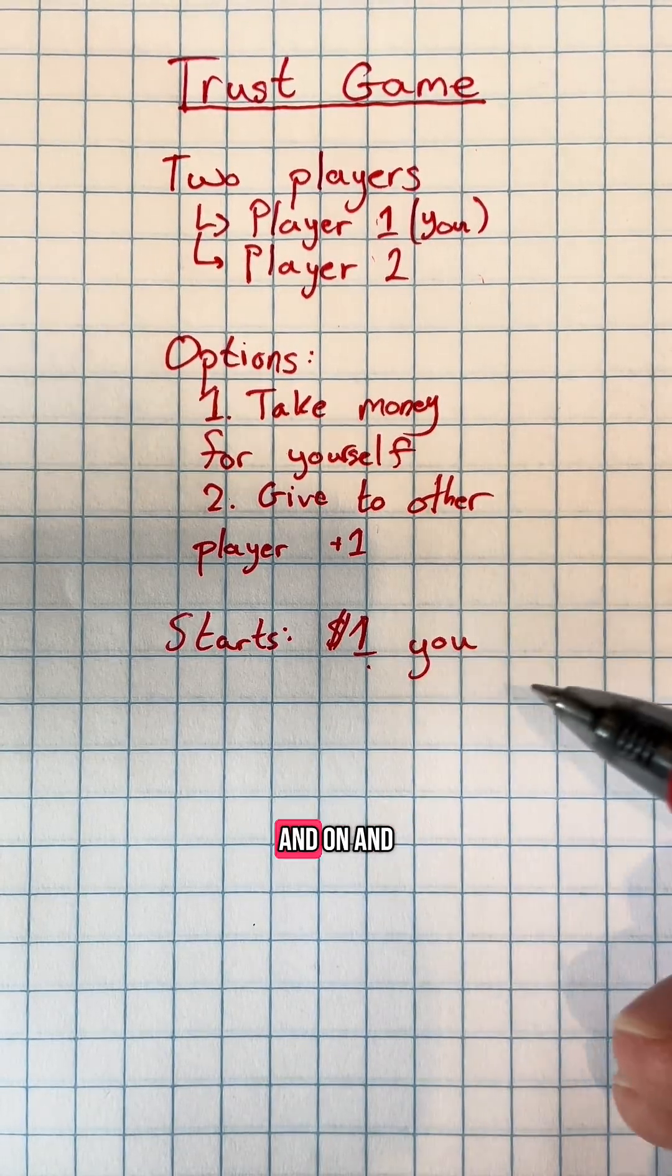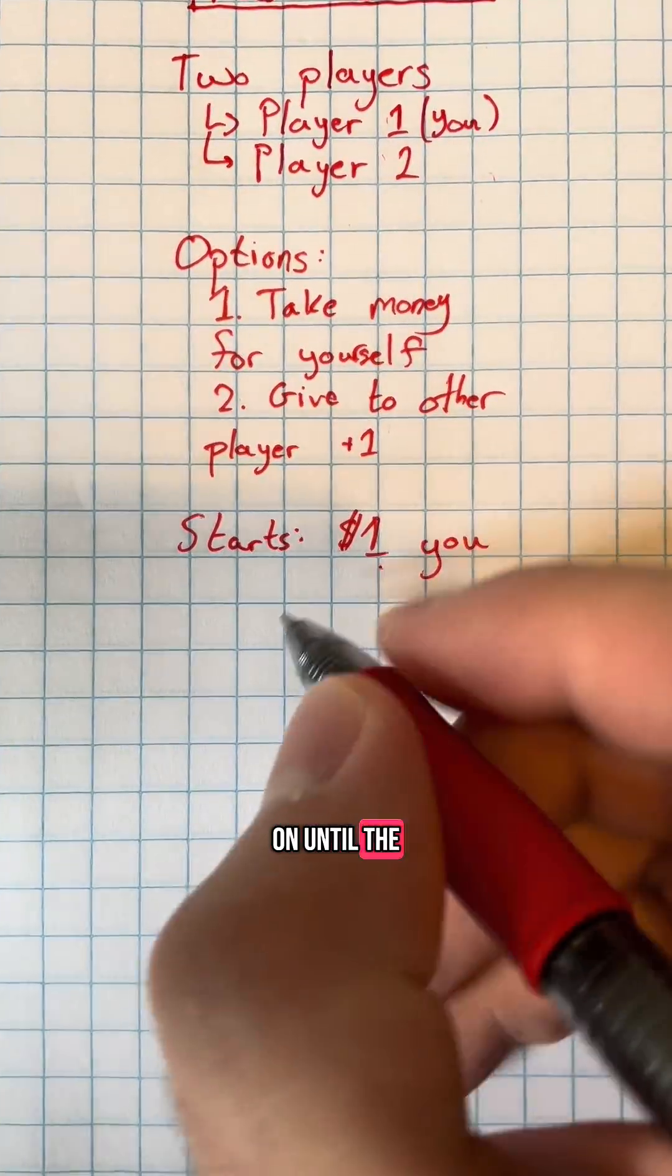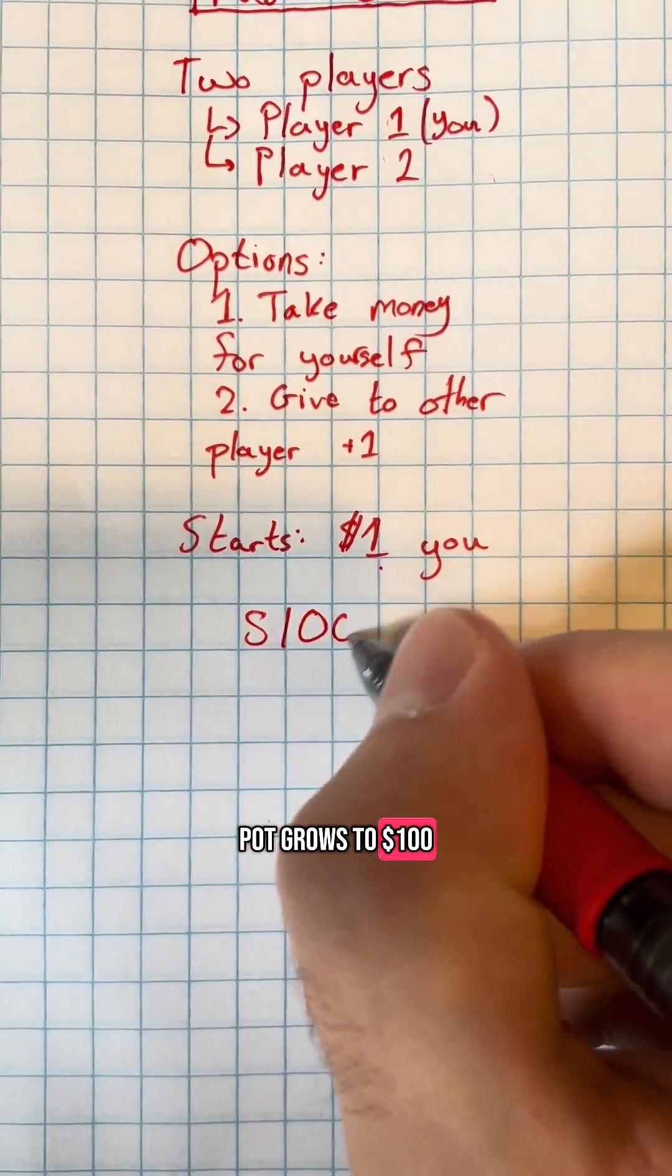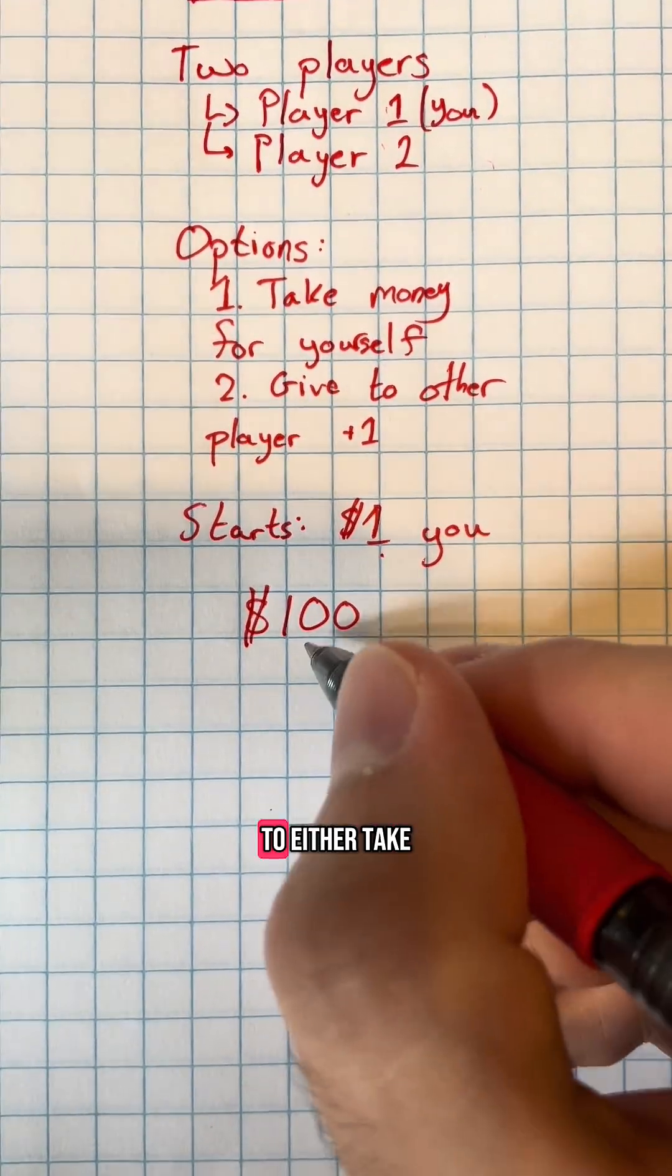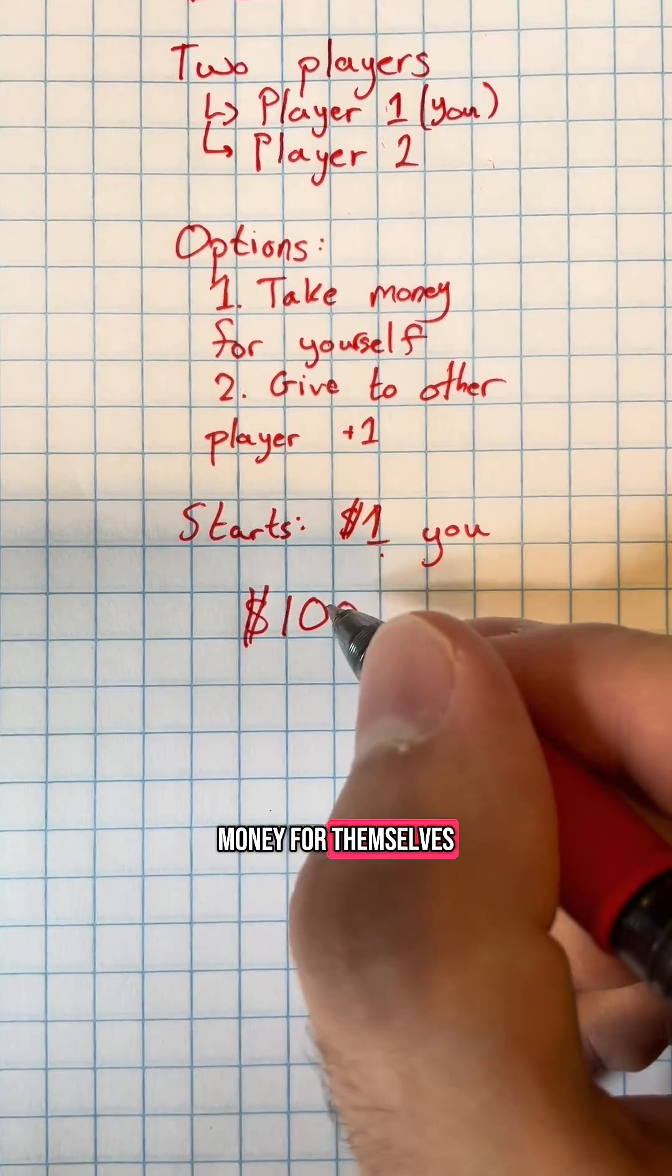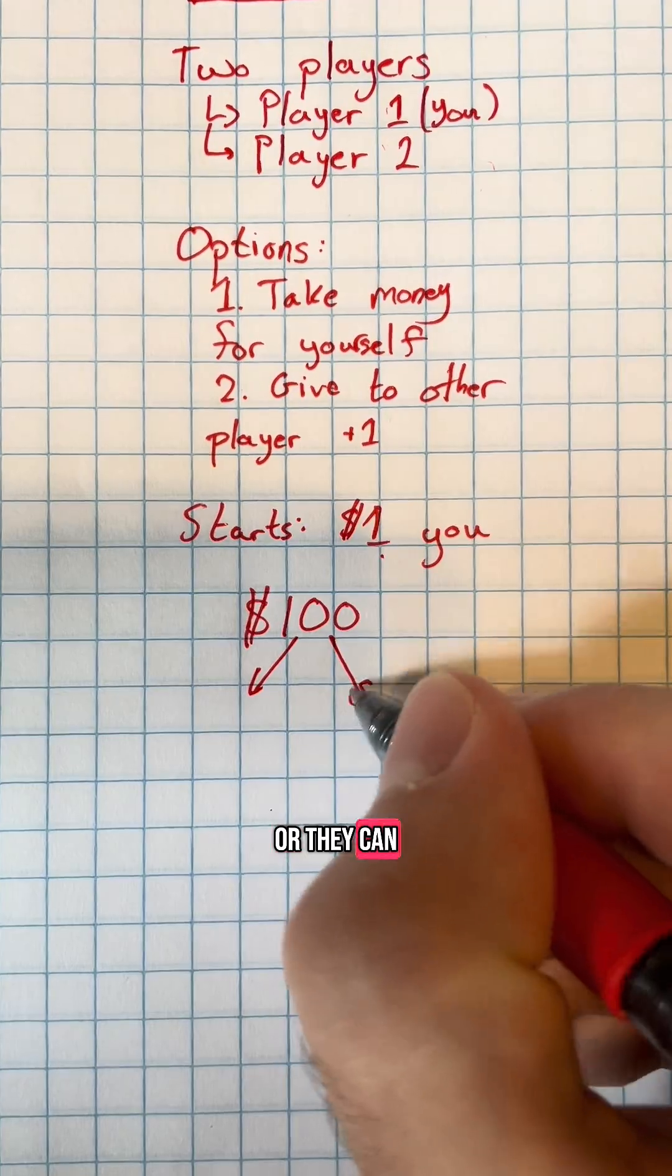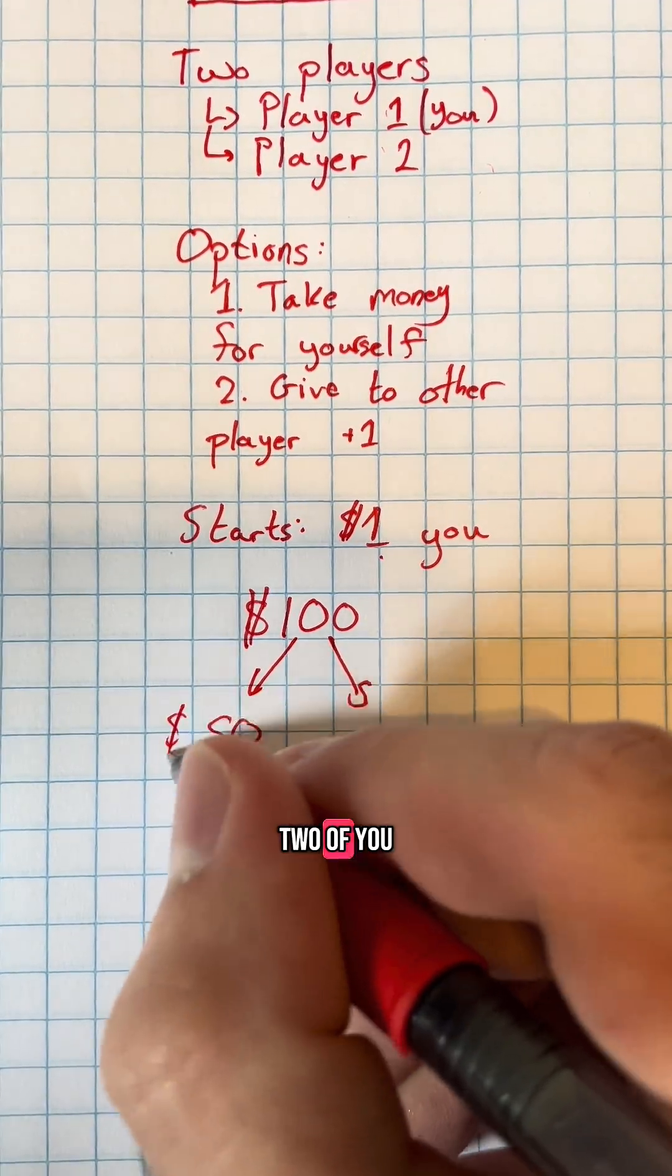This continues on and on until the pot grows to one hundred dollars. At this point, player two will have the option to either take all of the money for themselves, the full one hundred dollars, or they can decide to split it between the two of you, and each of you will get fifty dollars.